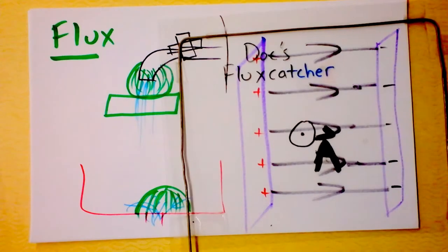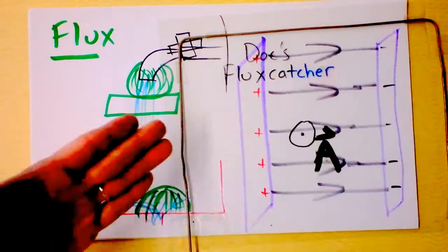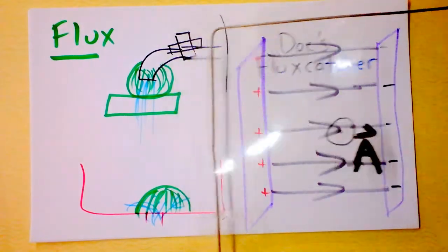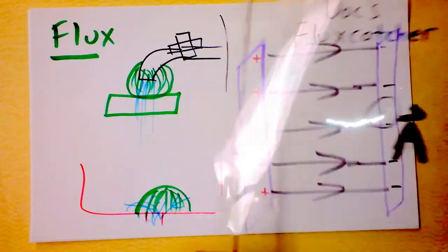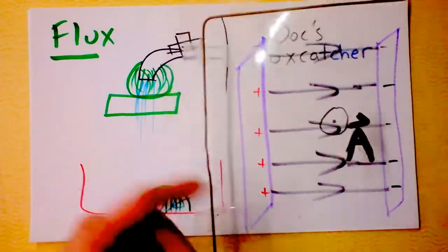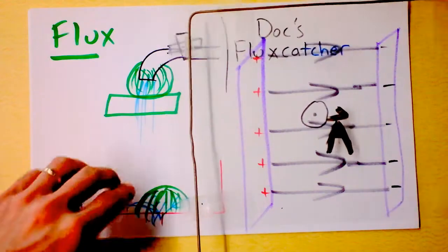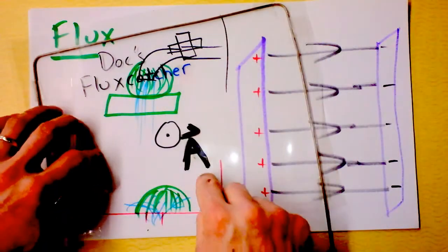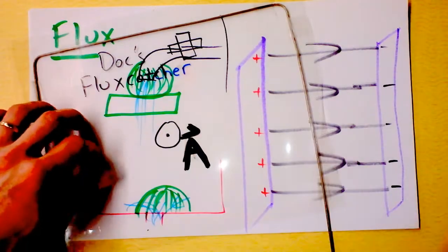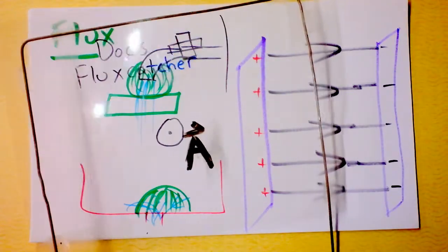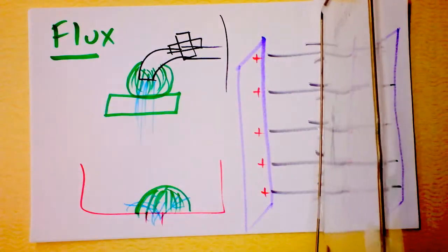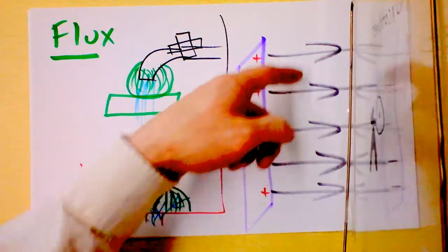If I put the flux catcher down flat like that, am I going to catch any flux? No — the electric field is not going through it at all. But if I rotate my flux catcher, then I get maximum flux going through it. There's an angle involved — a cosine. There's an area vector of the flux catcher, and it points normal to the surface. When the area vector is parallel to the electric field, you catch maximum flux; when perpendicular, you catch none.